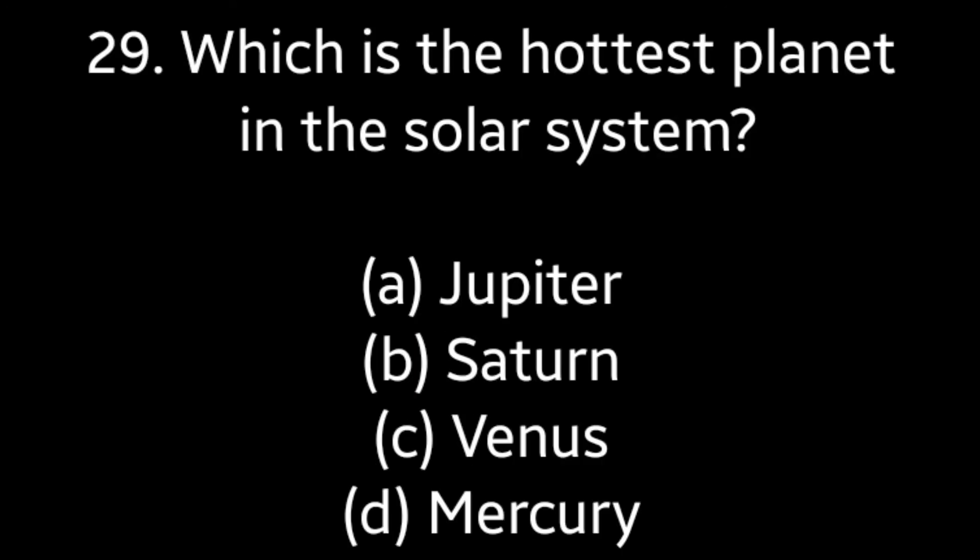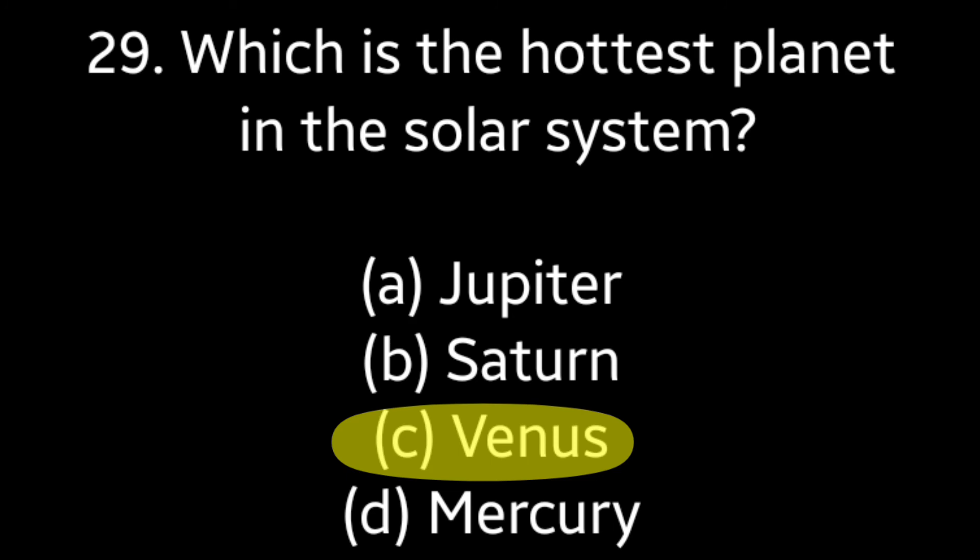Question number 29: Which is the hottest planet in the solar system? Options: Jupiter, Saturn, Venus, Mercury. Answer is option C — Venus.